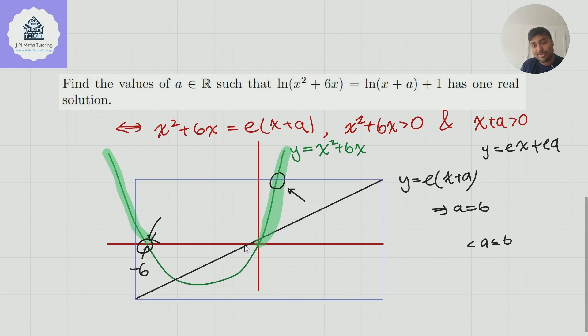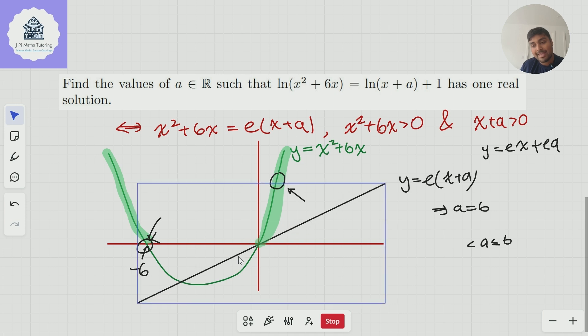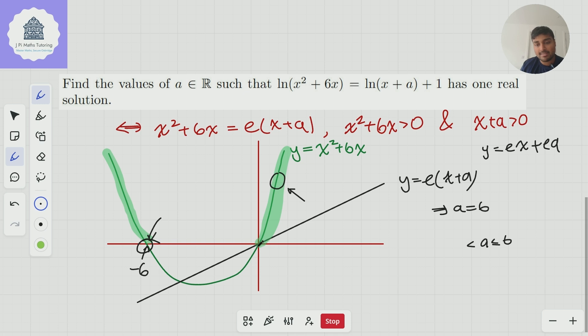Even if a is 0.01 like this that's fine. There's still just about a point of intersection there. But when a is 0 this line passes through the origin. And so this point here is (0,0). So x² + 6x is 0. So we can't have that. A is strictly bigger than 0 but less than or equal to 6. And that is how we solve this problem.